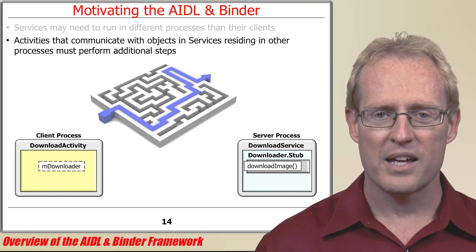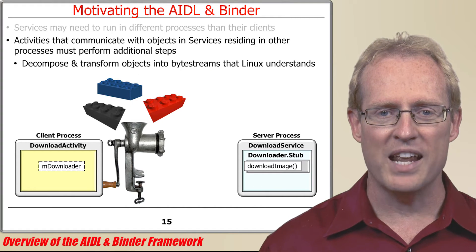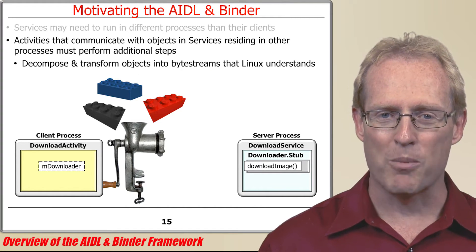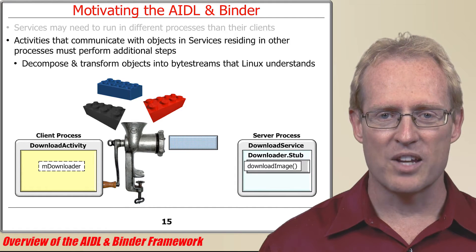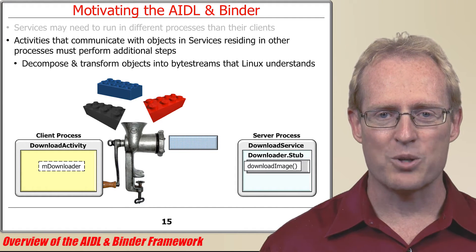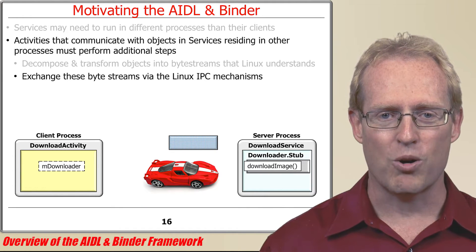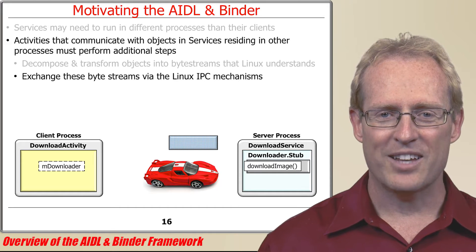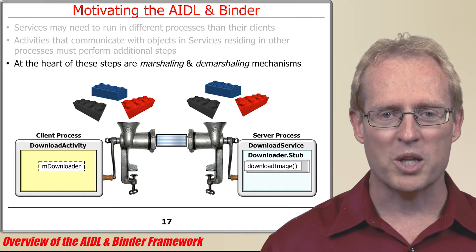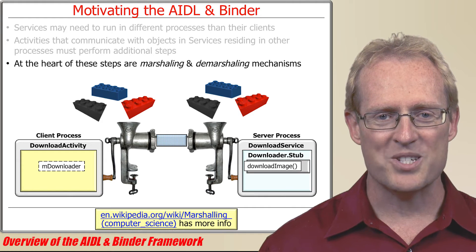In particular, they must decompose and transform the data in their objects, which may be arbitrarily complex, into byte streams that the underlying Linux operating system can understand, and then exchange these byte streams across address spaces via Linux inter-process communication mechanisms. At the heart of these steps are marshaling and demarshaling mechanisms, which are discussed here.